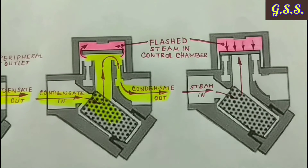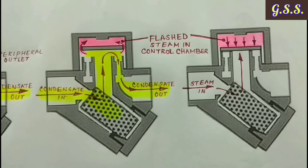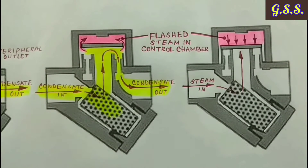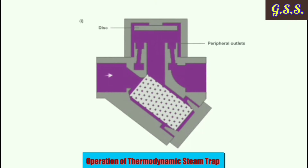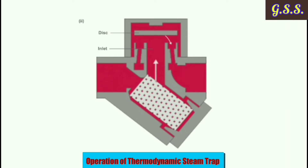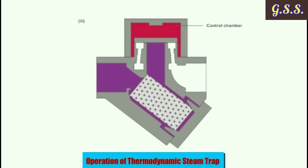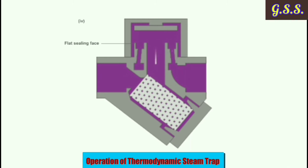Thermodynamic traps are most widely used due to their small size, wide pressure range, resistance to water hammer, and extremely robust construction with a simple mode of operation with only one moving disc. Now you can see how the thermodynamic trap works: condensate goes through it after pushing up the disc, and the flash steam is accumulated in the control chamber and closes the disc.